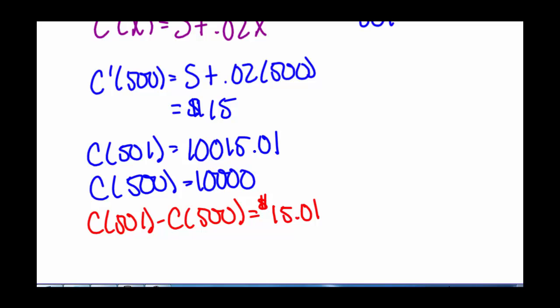Our marginal cost is a very good approximation to finding the cost of producing just one more additional item.